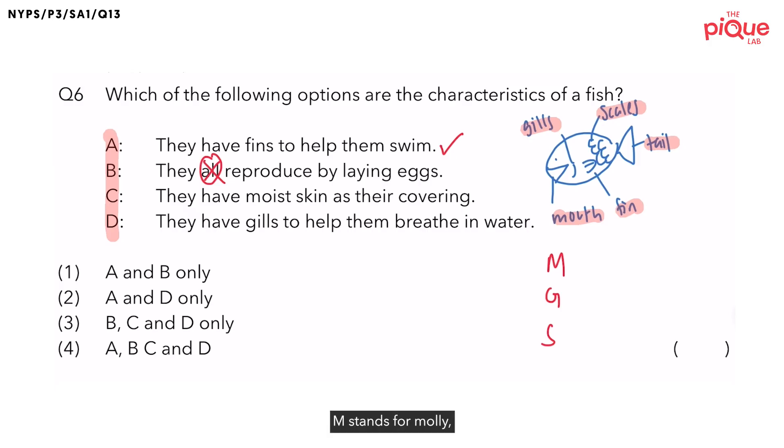Now, what does M stands for? M stands for molly. G stands for guppy. And S stands for swordtail. Thus, to say that all fish lay eggs is not correct. Therefore, this statement is wrong.